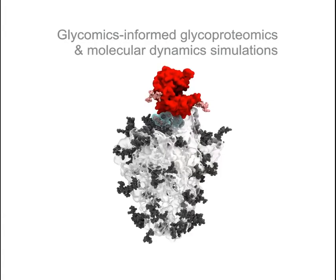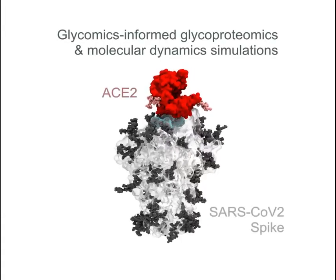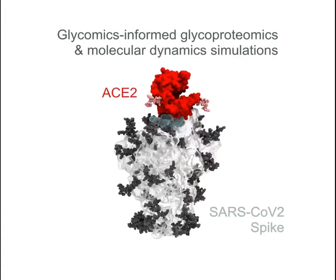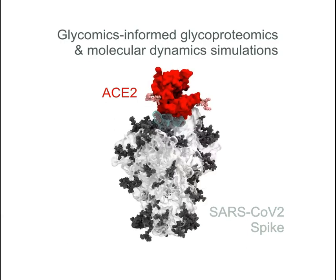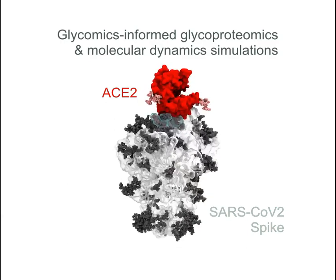SARS-CoV-2, the virus causing the current COVID-19 disease pandemic, uses a glycoprotein called spike to bind to a protein called ACE2 on human cells.